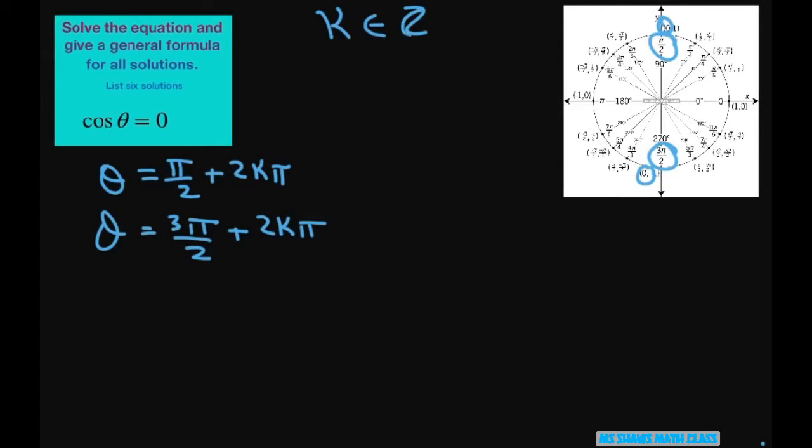And that just means k can be 1, 0, negative 1, 2, just your integers. So if k is zero, before we look at this one, if k is zero we get θ = π/2.